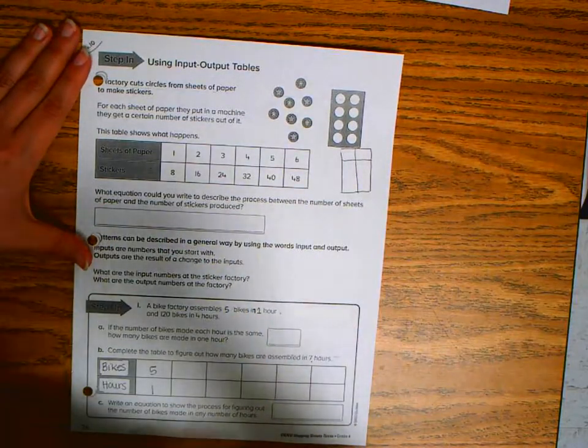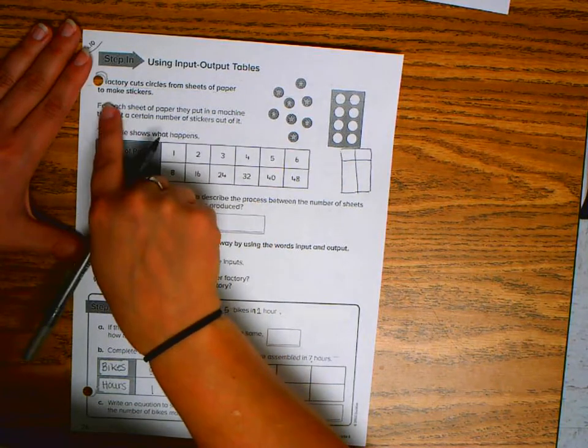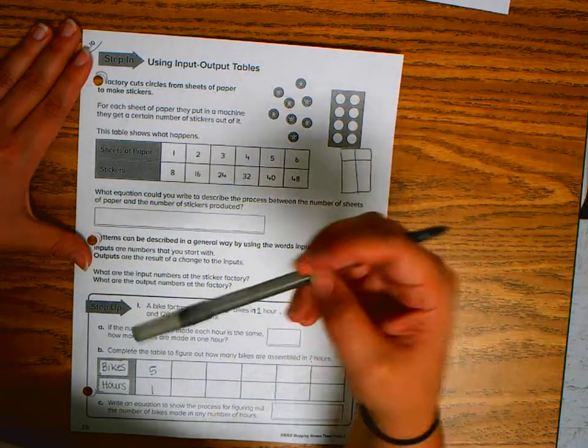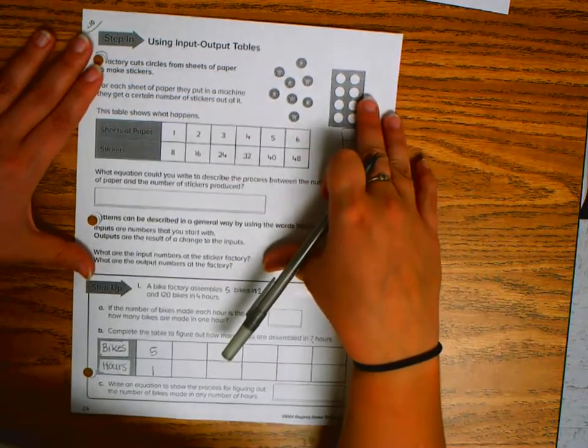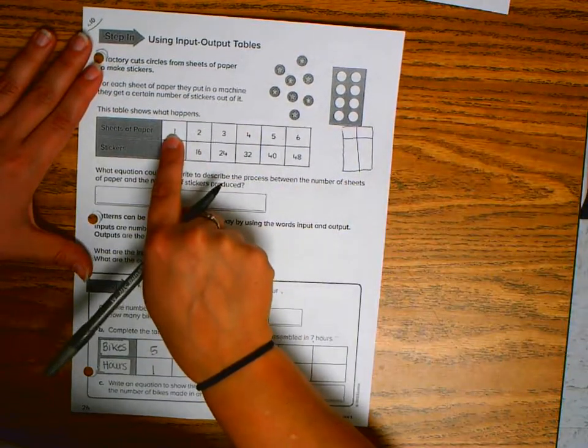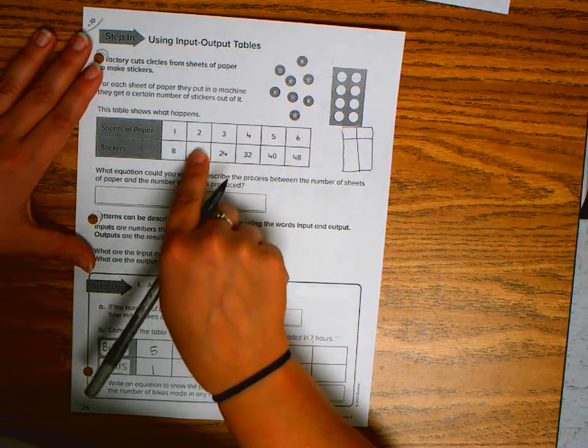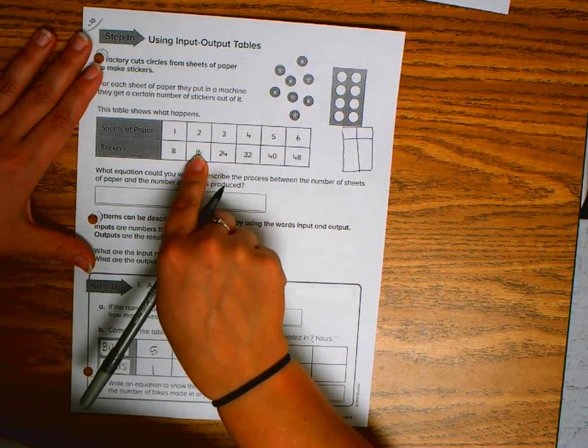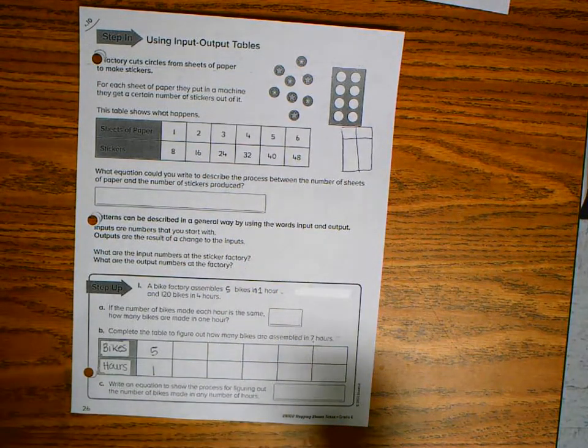In this case we see that a factory cuts circles from sheets of paper to make stickers. For each sheet of paper they put in a machine they get a certain number of stickers out. We put in one piece of paper and we're getting out eight stickers. We put in two pieces of paper we're getting out sixteen stickers. So we're actually going to a larger number.